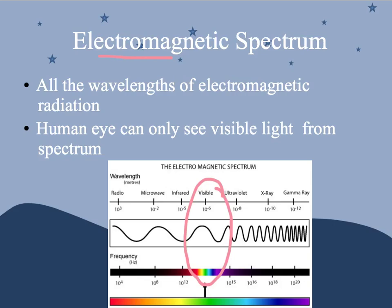Do you remember the spectrum of visible light? It's ROY-G-BIV. We have our longest wavelength on one side and our shortest wavelength on the other side. So it goes red, orange, yellow, green, blue, indigo, violet.